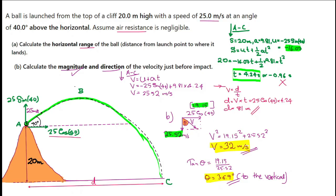So the final answers: the resultant velocity just before impact is 32 m/s at an angle of 36.9 degrees to the vertical. For part A, the horizontal range is 81 meters.